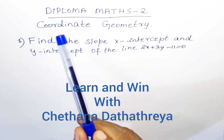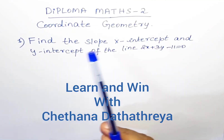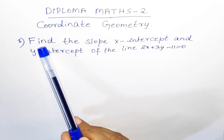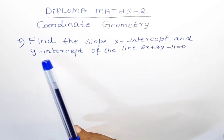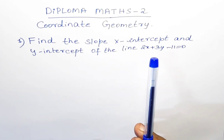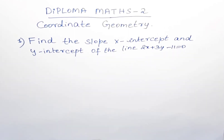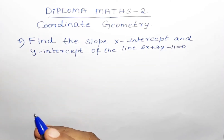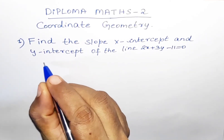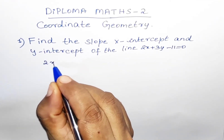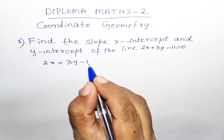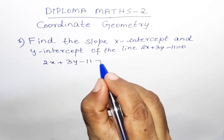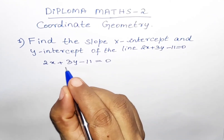Welcome to Diploma Maths, coordinate geometry. Let us solve the first problem: find the slope, x-intercept and y-intercept of the line 2x + 3y - 11 = 0. First, let us write the given equation: 2x + 3y - 11 = 0.